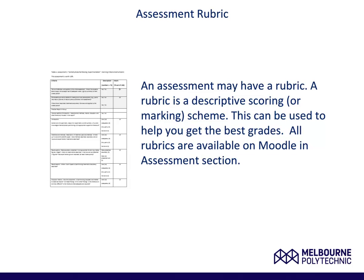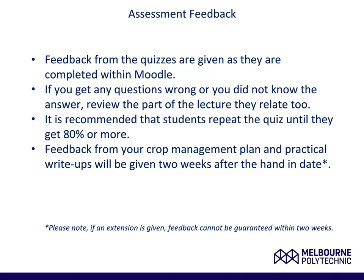With respect to assessment feedback, you will receive it in a number of ways throughout this subject. There will be feedback from quizzes — the quizzes are on Moodle and feedback is instantaneous. They are a good guide to see whether you are understanding the topics. As a rule of thumb, students who do the quizzes and get 80% on their last attempt will tend to pass the subject with a good grade. Feedback will also come from your crop management plan and practical write-ups. I aim to have all feedback within two weeks of the hand-in date. Please note, if any extension is given then feedback cannot be guaranteed within two weeks.